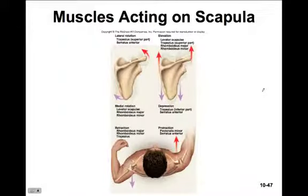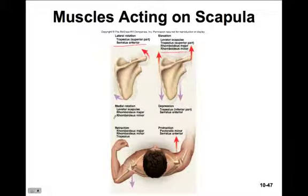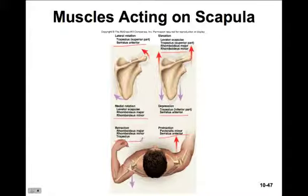This figure summarizes all the muscles acting on movement of the scapula. For lateral rotation: the trapezius and the serratus anterior. For elevation: the levator scapulae, the trapezius, and both rhomboid muscles. For medial rotation: the levator scapulae and rhomboids major and minor. For depression: the trapezius and the serratus anterior. For protraction: pectoralis minor and serratus anterior. And for retraction: rhomboids major and minor and trapezius.